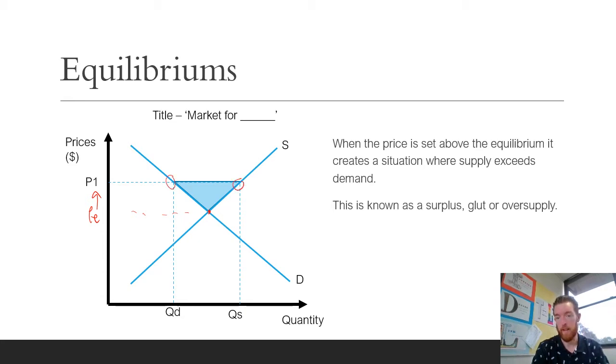When you follow that price along, demand is relatively low at this point. The supply is all the way over here and that makes sense because if the price is higher there's less demanded and if the price is higher there's going to be more supply because of profit motivation. This whole quantity above the equilibrium is a surplus, glut or oversupply.